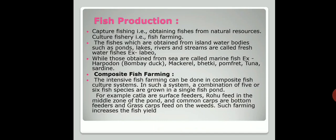An important concept in fishery is composite fish farming. In this system, a combination of five or six fish species are grown in a single fish pond. This is similar to inter-cropping or mixed cropping in agriculture, where more than one crop is grown in the same field at the same time.